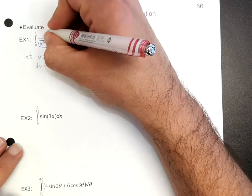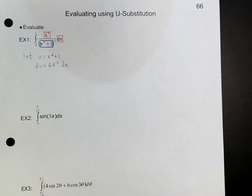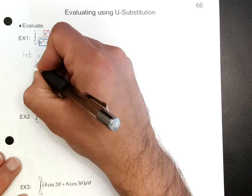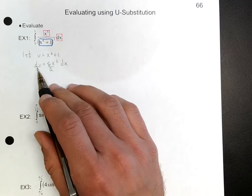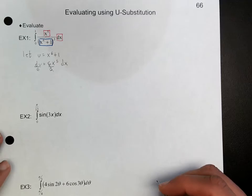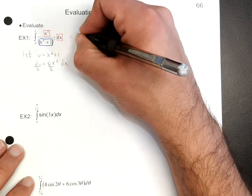Notice that I have x to the 5th power dx right there. However, I have a 6 here that I need to get rid of, so I can divide both sides by 6. That gives us x to the 5th power dx equals du over 6, or one-sixth of du. Now we're going to rewrite this in terms of u.